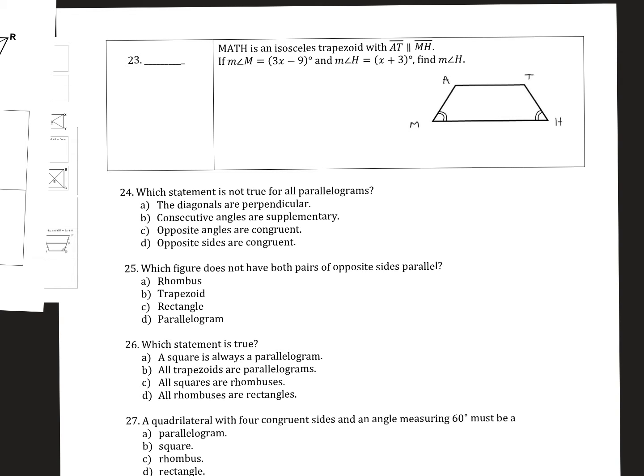Alright, number 23. Trapezoid MATH is an isosceles trapezoid, so we know that these base angles are congruent. That's the information they're giving us. The measure of angle M is congruent to the measure of angle H. That's our strategy - these two base angles are congruent, now you plug in the algebra.